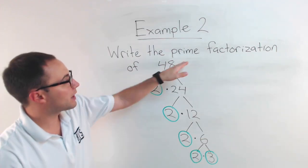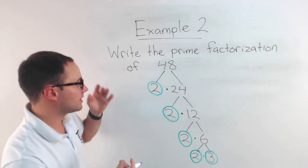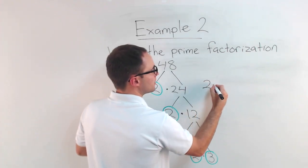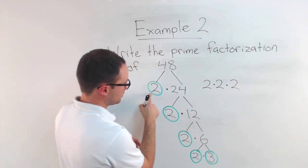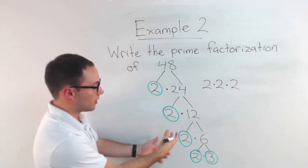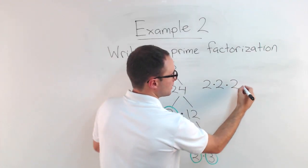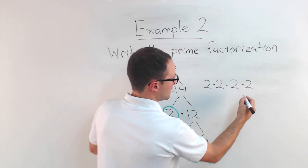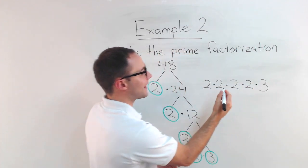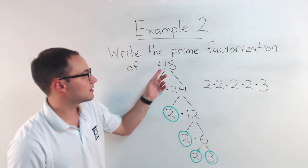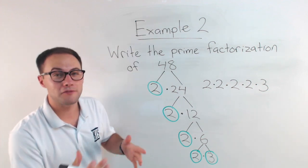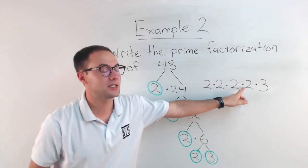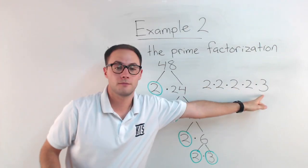So my prime factorization of 48 is two times two times two times two times two times three. You're just following all the ones that you circled. That's the prime factorization of 48. Remember, it's the product of all its prime factors. Product meaning multiplication, right? Those are all the prime factors.